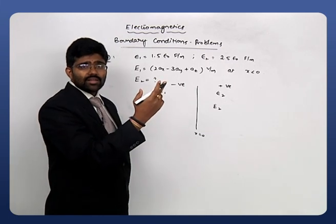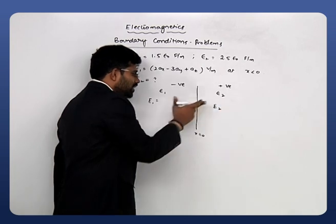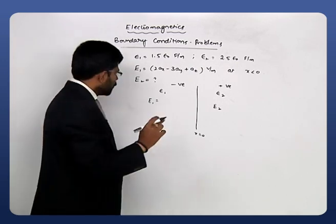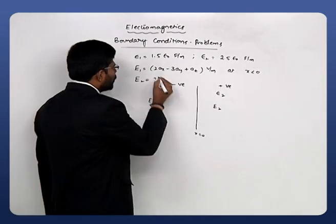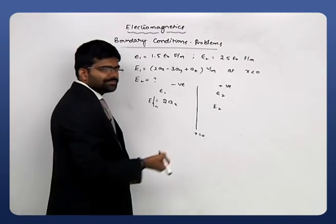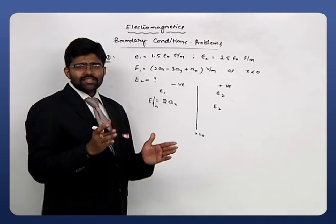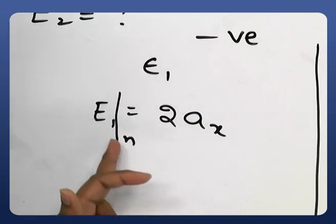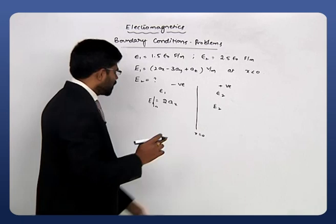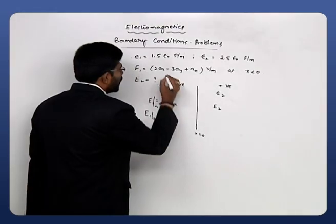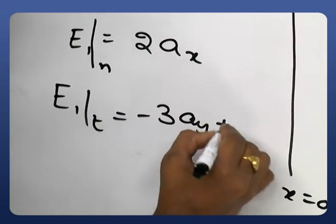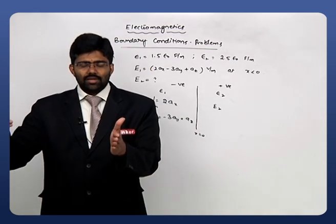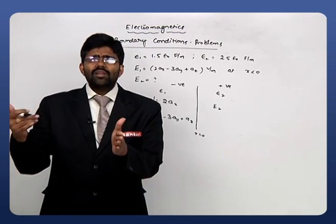For E₁ = 2ax − 3ay + az, the normal component is the x-directed term: E₁n = 2ax. The tangential component is E₁t = −3ay + az. The component in the x-direction is normal to the boundary, and the remaining components are tangential.